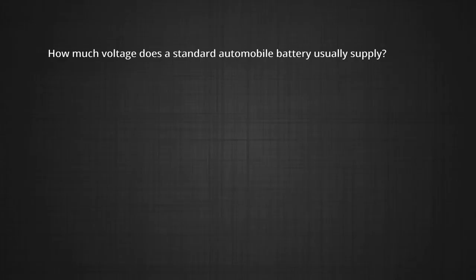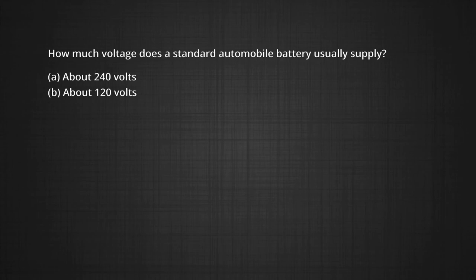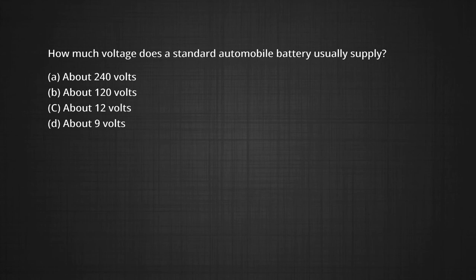Now we can do some problem solving. Can you guess what voltage automobile batteries usually supply? The options are 240 volts, 120 volts, 12 volts, or 9 volts. Suppose we are using a battery in a car or a bike — what would be the supply voltage? The answer is about 12 volts.